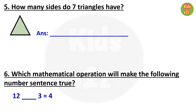Question 5: How many sides do 7 triangles have? We know a triangle has 3 sides, so 7 triangles have 7 multiplied by 3, which equals 21 sides. Question 6: Which mathematical operation will make the following number sentence true?